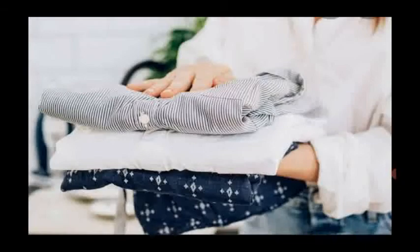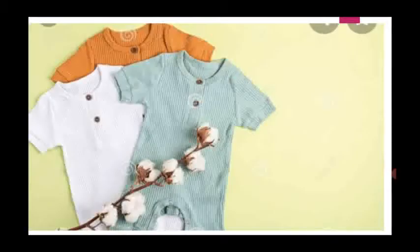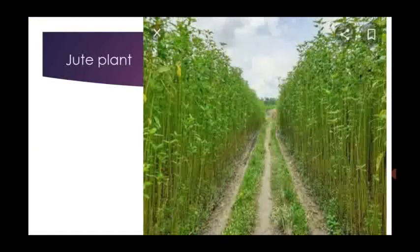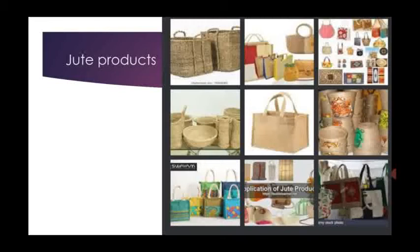Using cotton, we can make different types of dresses. The second important plant fabric is jute. Look at this picture — this is the jute plant. Jute is obtained from the jute plant. It is thick, strong, and durable. It is used to make ropes, bags, carpets, and even cloth.